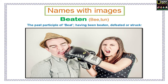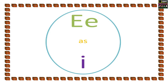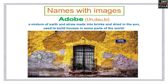E as in Names with images. Here you will see the word, its explanation with an image. Beaten: the past participle of beat, having been beaten, defeated, or overcome. Sweetened: to make something taste sweet.